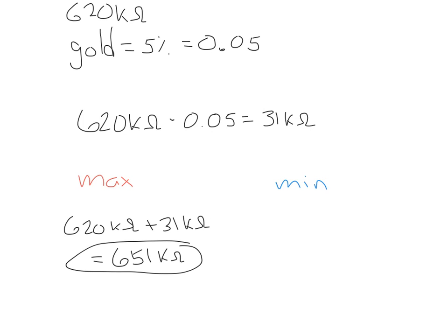And for the minimum, I do exactly the opposite. That's 620 kiloohms. And you subtract 31 kiloohms. And when you do this, you're going to get 589 kiloohms. So we can expect our maximum value for this resistor to be 651 kiloohms and anywhere down to 589 kiloohms.